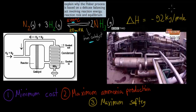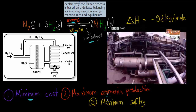So why we choose 500 degrees Celsius, why we choose 200 atmospheres in terms of pressure, why we use an iron catalyst. Some of the reasons why we consider all this are: we want to minimize cost, we want to maximize the ammonia production, and we want to make it as safe as possible.